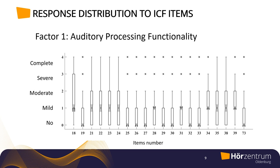For example, for Factor 1 — auditory processing functionality — the responses range from 0 to 4: no problem, mild, moderate, severe, and complete. On the x-axis, you can see each item and each question, and this shows the distribution of subjects' responses to each item.